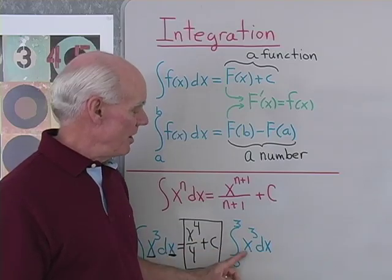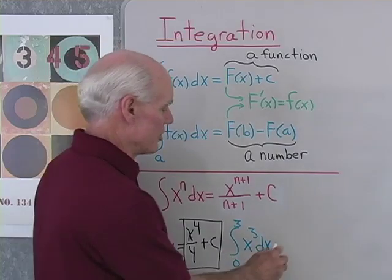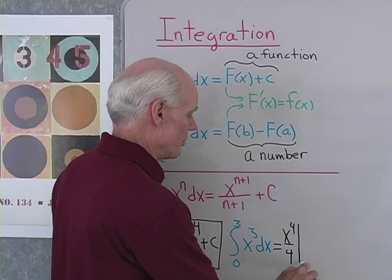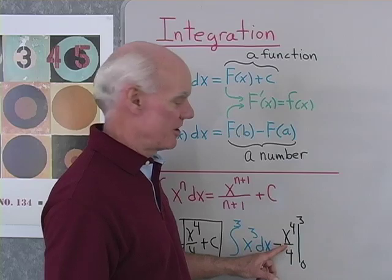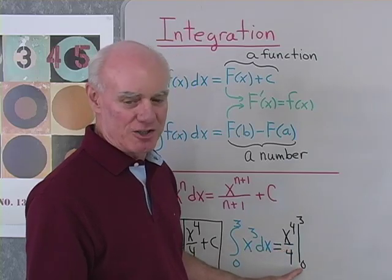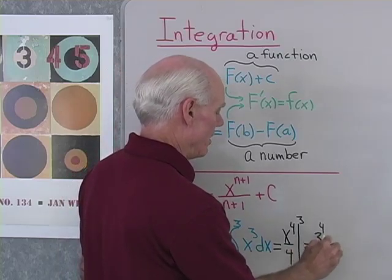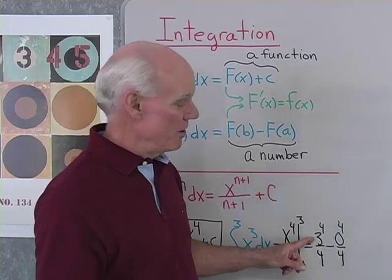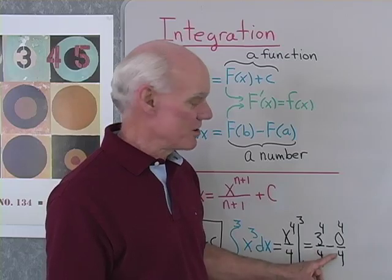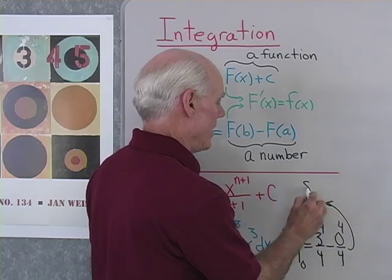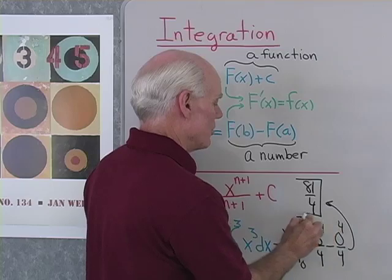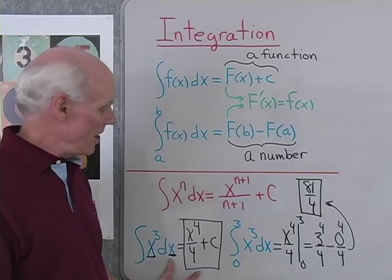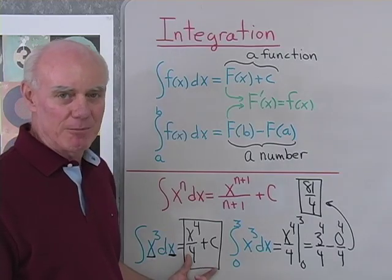What about the definite integral from 0 to 3 of x to the 3rd dx? Very similar — I'll find the antiderivative, x to the 4th over 4, and then evaluate it at 3 and subtract what I get when I evaluate it at 0. So that's 3 to the 4th divided by 4, minus 0 to the 4th divided by 4. Now 3 to the 4th is 81 divided by 4, and this term is 0, so I end up with 81 over 4. With a definite integral I end up with just a number, while an indefinite integral gives me a family of functions.